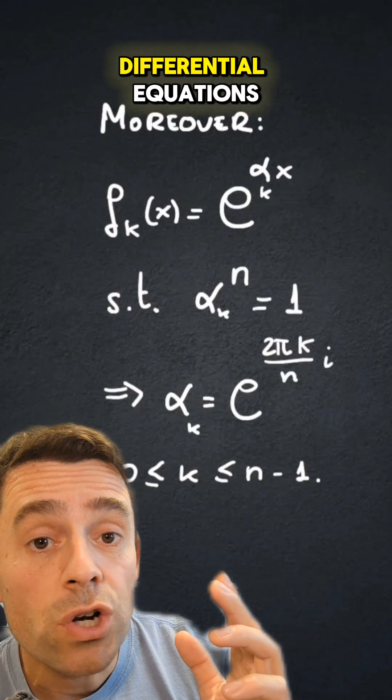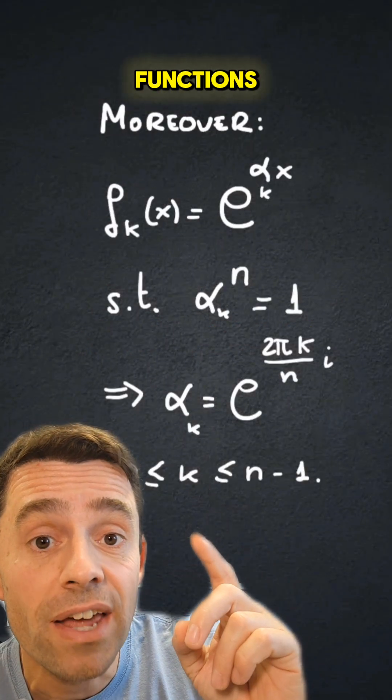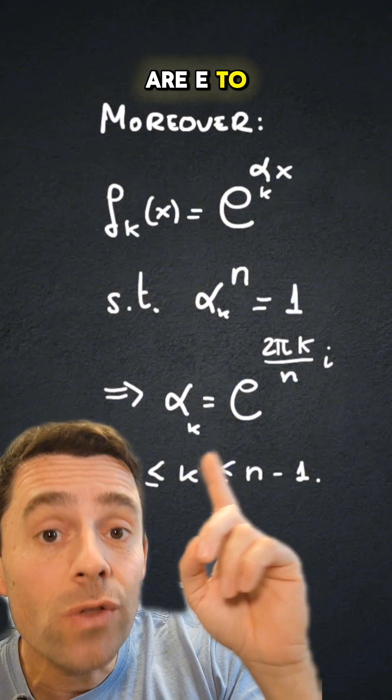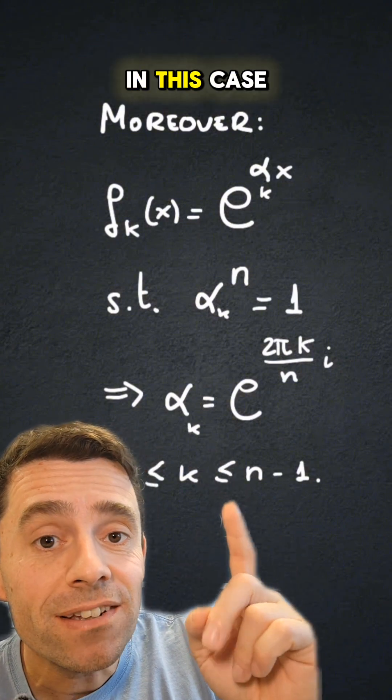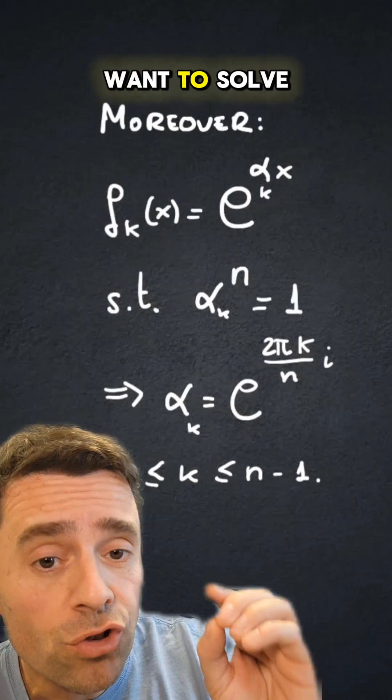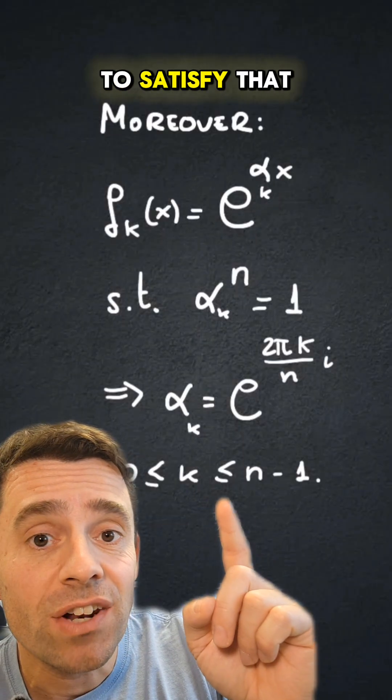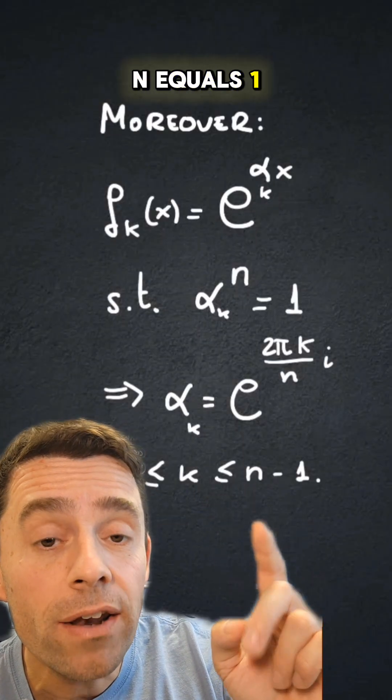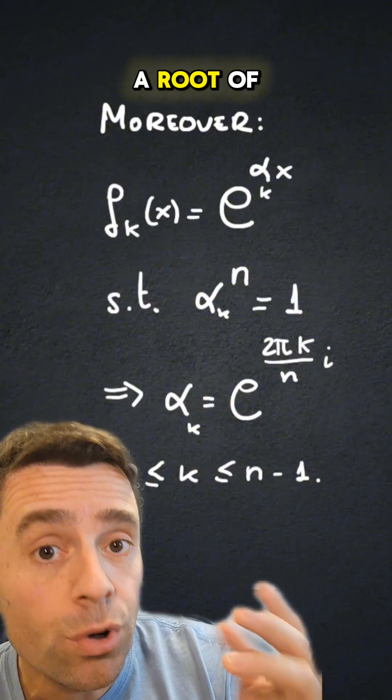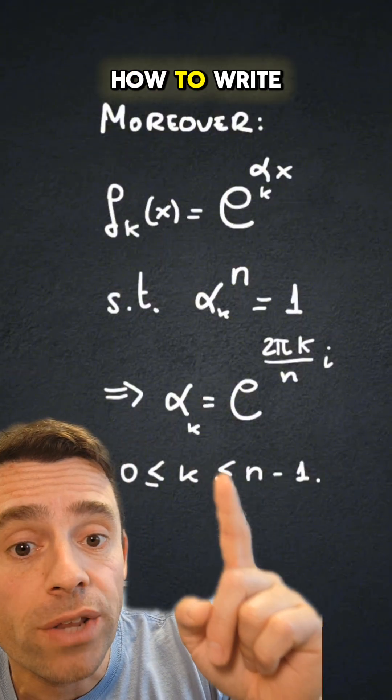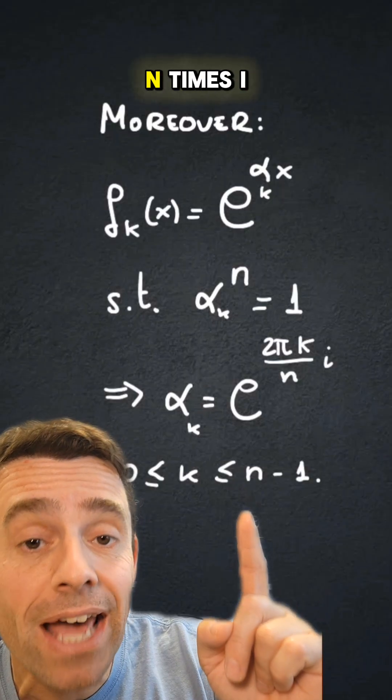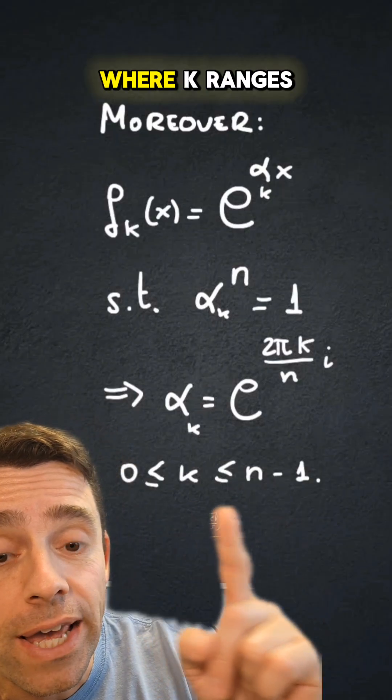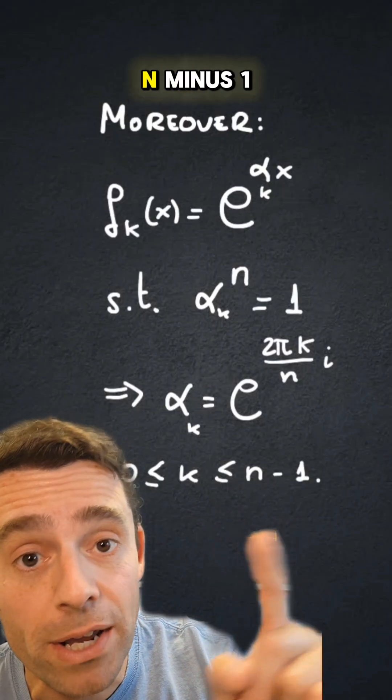The theory of differential equations also tells me that those basic functions f sub k are e to the alpha x where alpha is some complex number. In this case, because of the differential equation we want to solve, alpha has to satisfy that alpha to the n equals 1, so alpha is what we call a root of unity in the complex numbers. We know how to write those: alpha k is e to the 2 pi k divided by n times i, where k ranges from 0 to n minus 1.